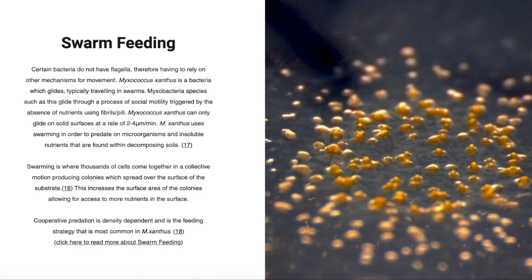Swarm feeding. Myxobacteria are predators, travelling in swarms towards their prey. A swarm is where thousands of cells come together in a collective motion, producing colonies which can spread over a surface.